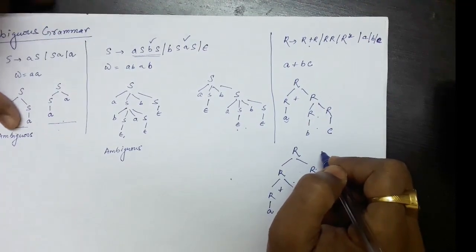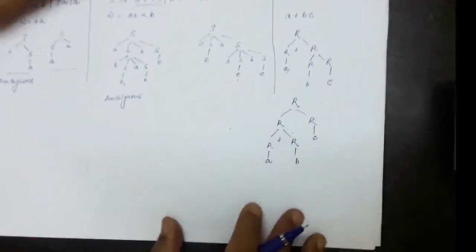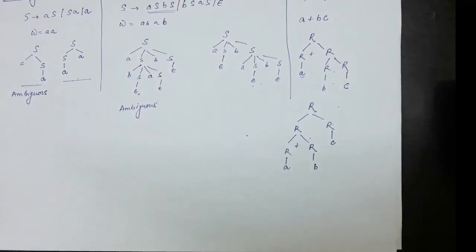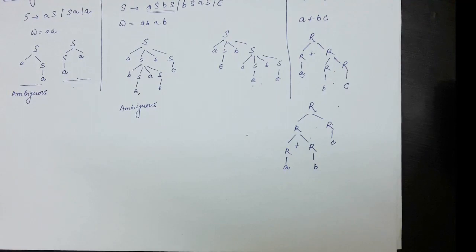Now, how do we convert an ambiguous grammar to an unambiguous grammar, and why is this needed? With an ambiguous grammar we would be confused about which production to use for the derivation. So if we do not want that confusion, we must convert the ambiguous grammar to an unambiguous grammar. There are certain steps by which we can do this conversion.